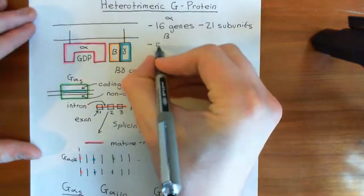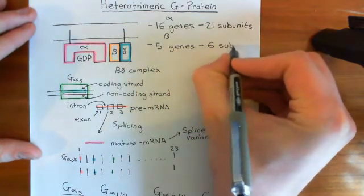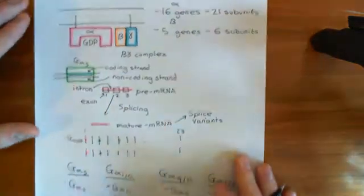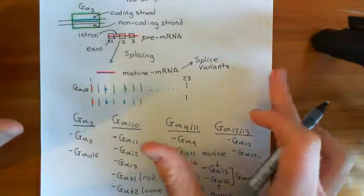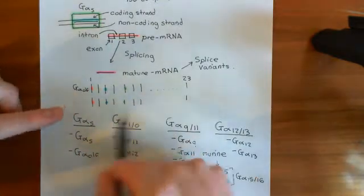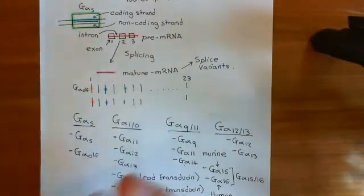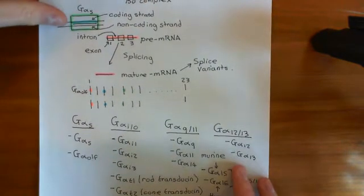For beta subunits, you have five genes in the human genome, and then you have overall six subunits. On a set of 23 chromosomes — your maternal set — you will have five separate genes which code for beta subunits, and because of different splice variants you'll end up with six different proteins. On your paternal set you'll have another five genes, so overall you have 10 genes, but of course there's redundancy there — two genes doing effectively the same thing, making the same protein.